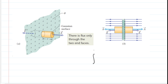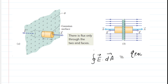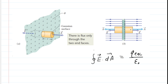Gauss's law tells us to take the total electric flux penetrating our Gaussian surface and set that equal to the total amount of charge enclosed by our Gaussian surface divided by a physical constant. The electric field lines are only penetrating the right end cap and the left end cap. None of the field lines are penetrating the side. There's no electric field vector pointing up or down, so we only need to consider the electric flux through the left end cap and the right end cap.